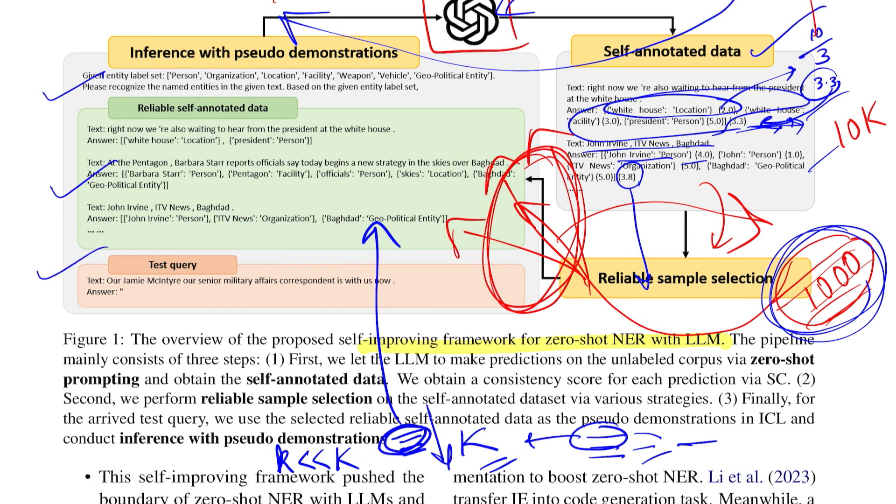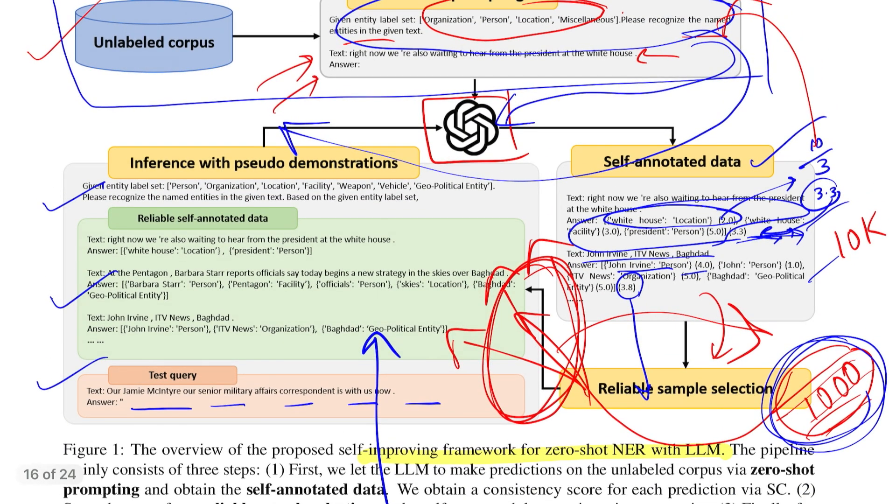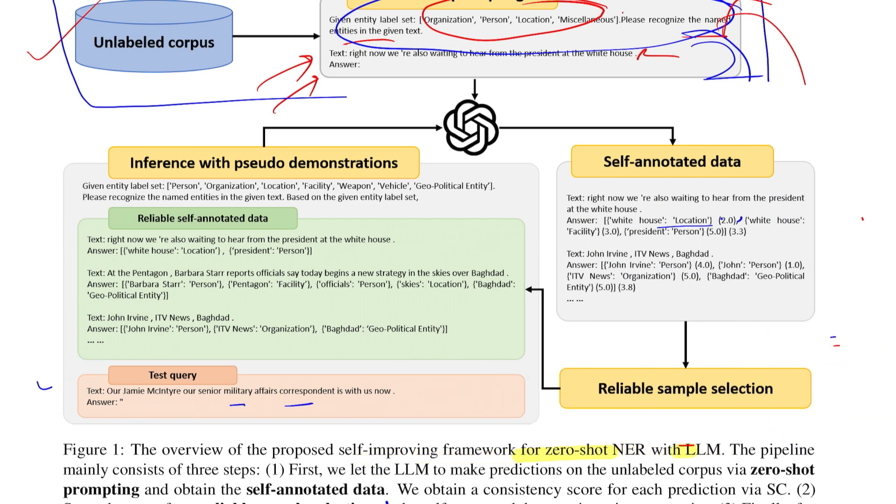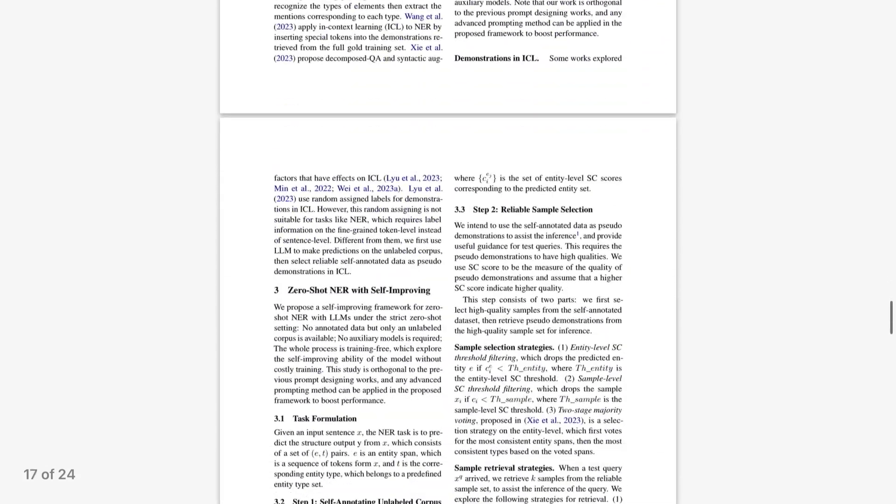So after you have retrieved what we essentially were doing is we had the initial prompt, we added these reliable self-annotated data and then we had a test query for which now the model had to make the prediction. So that's the entire loop and as you can see this can go for n number of times. What I just told was one loop but that again can be used for doing prediction on the unlabeled corpus that you had and you again extract some reliable samples, you retrieve some top k samples, you again do the prediction on the validation set and based on how your validation score is fluctuating you can choose this cycle count n to how many times you would want to do. So that's the idea of the entire paper.